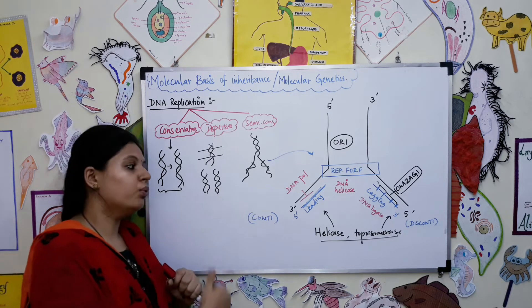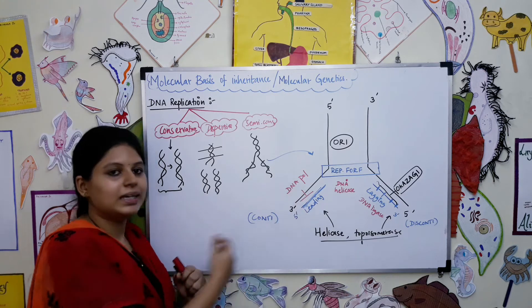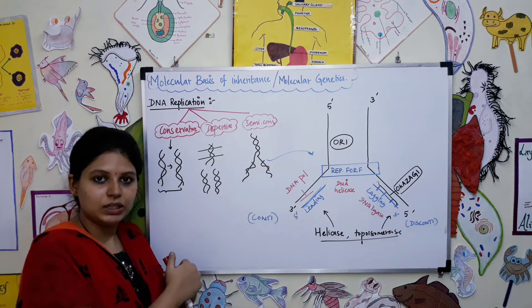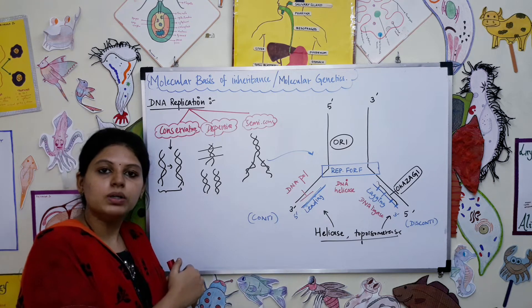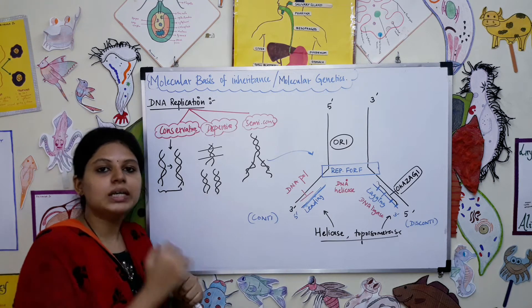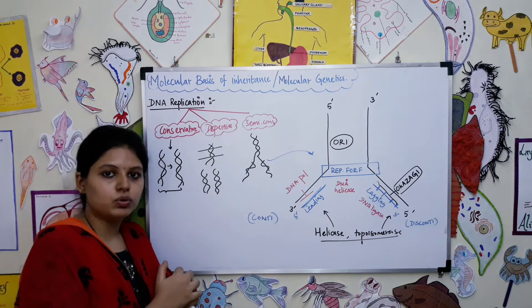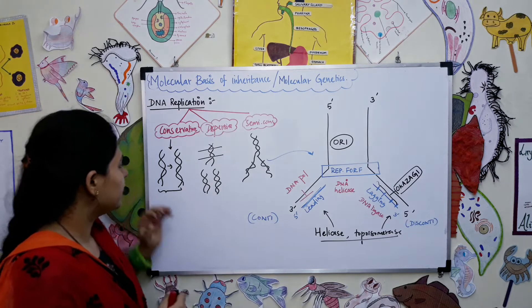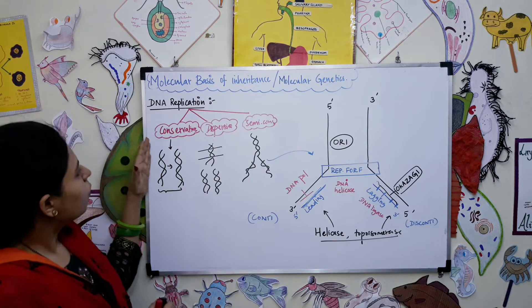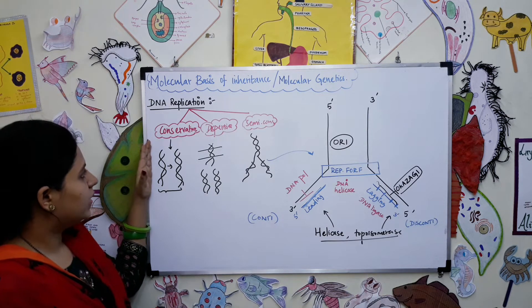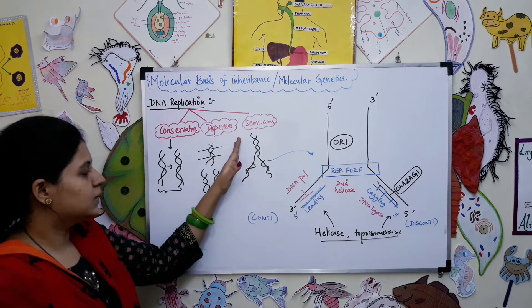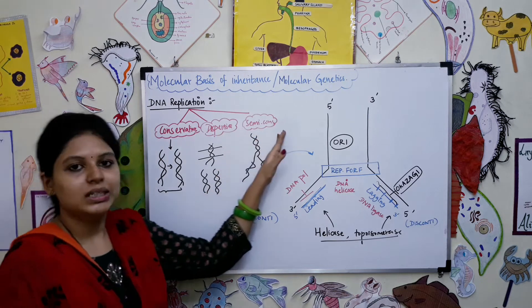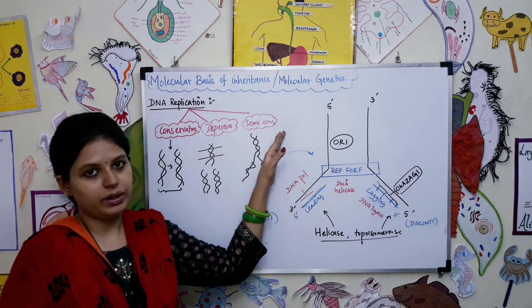Before moving on to the diagrammatic explanation, we will talk about the three important types of DNA replication. The three types are: conservative, dispersive, and semi-conservative.